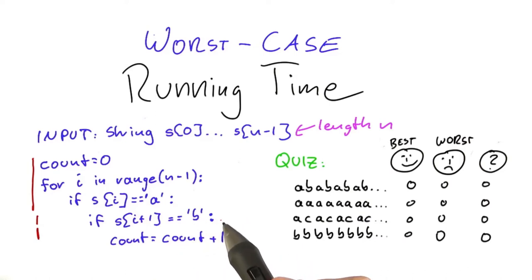Now, in a worst-case input, we would want these two lines to get executed as often as possible, and in a best-case scenario, we would want them to get executed the least possible number of times. So what we can already say is that a best-case input will cause these two lines here to never be called.